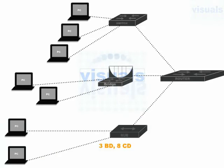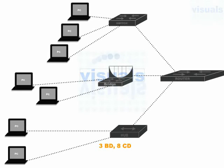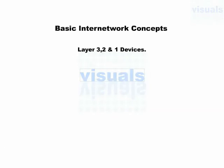An important clarification: when a router is included in the scenario, we count broadcast domains through the router. We do not count the router's broadcast domains separately and then count switch and bridge broadcast domains again. If there is no router connecting these devices, then apart from counting collision domains, we count a single broadcast domain for all those devices combined.